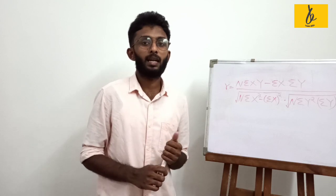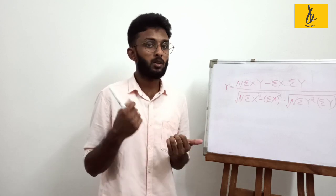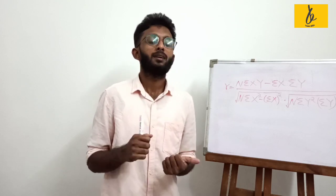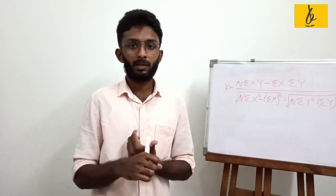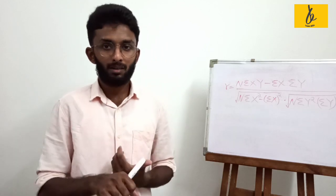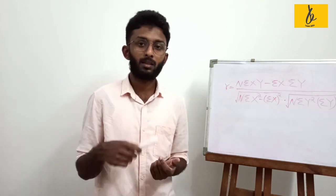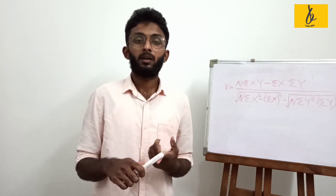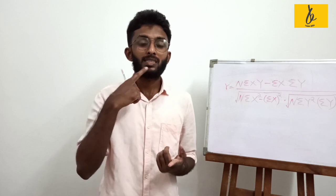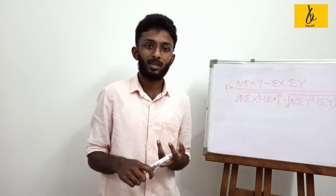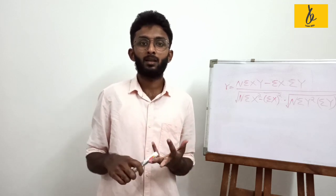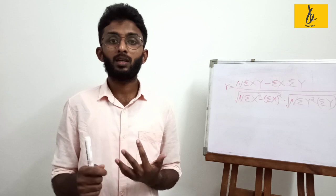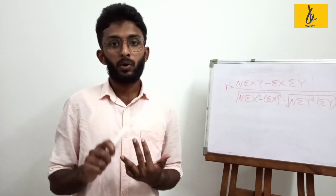There are four methods. There is a direct method based on given value. There is a direct method based on the variance from its actual mean. There is a short method. There is a correlation coefficient using covariance.